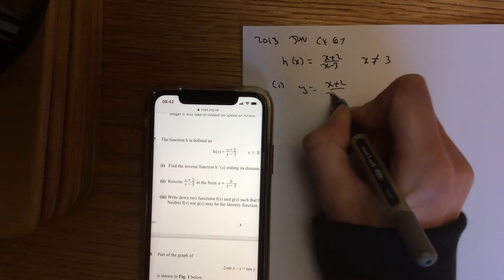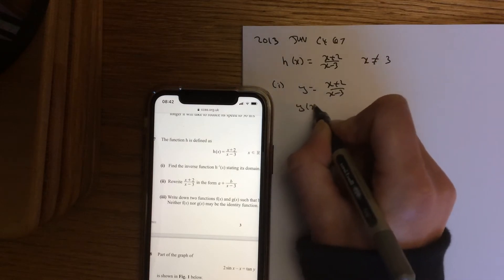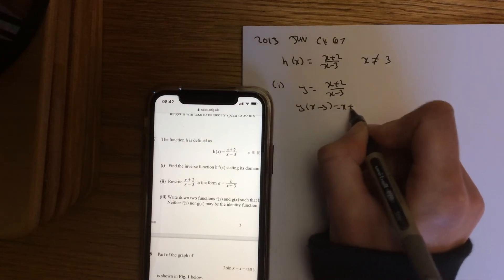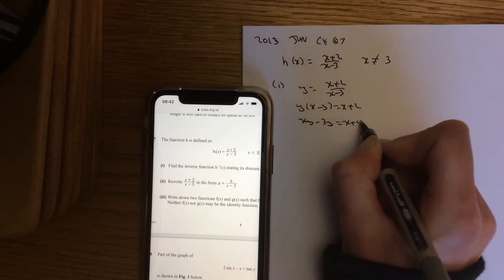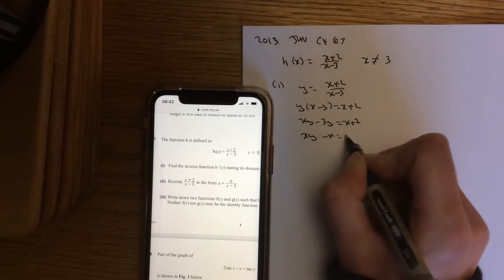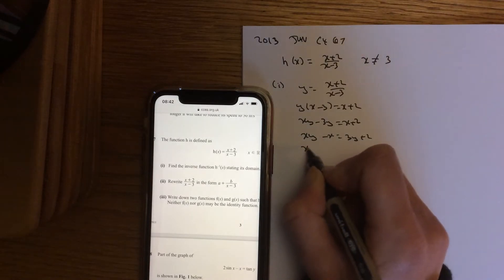So y equals (x+2)/(x-3). Rearrange that and we're going to expand out our brackets. You want all the x's on one side and all the non-x's on the other side.